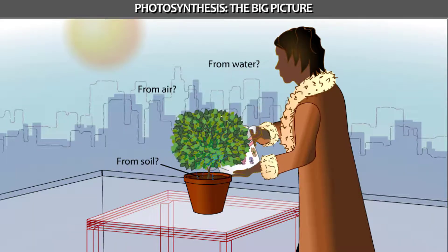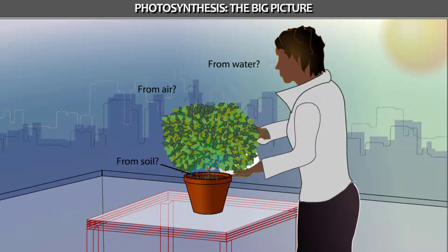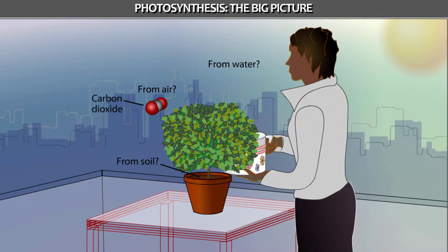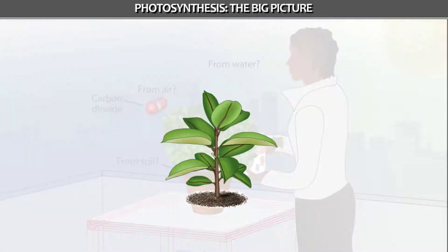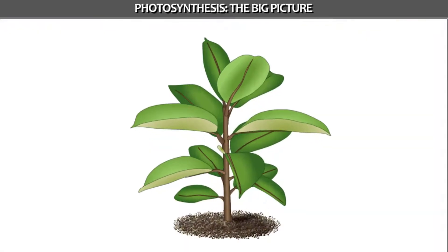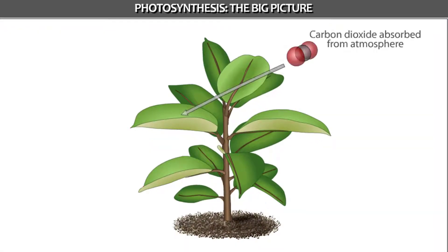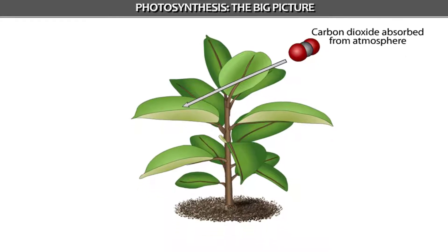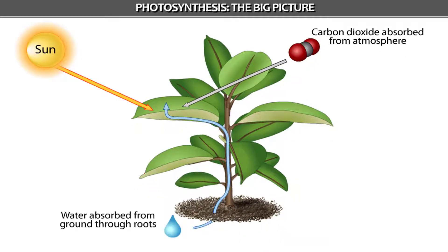The amazing truth is that most of the new material comes from an invisible gas in the air. In the process of photosynthesis, plants capture carbon dioxide gas from the air, energy from sunlight, and water and small amounts of chemicals usually found in soil.